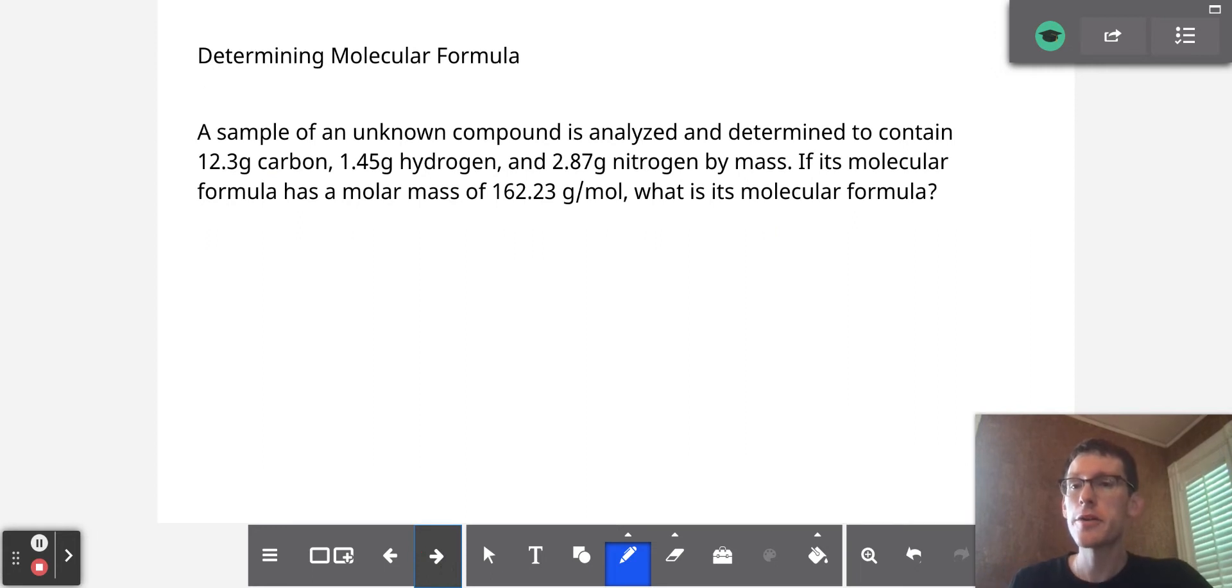In order to determine a molecular formula, here's a practice problem. Let's say we have a sample of an unknown compound that's analyzed and determined to contain 12.3 grams of carbon, 1.45 grams of hydrogen, and 2.87 grams of nitrogen by mass.